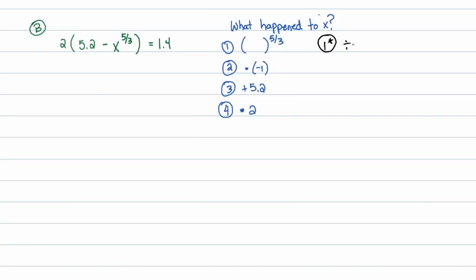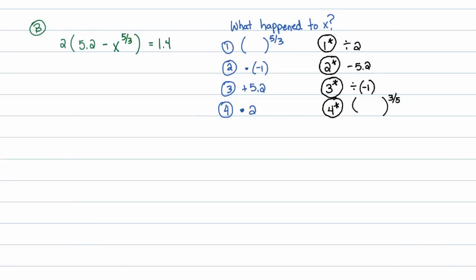To undo all of that in reverse order: first I'll divide by 2, since the last thing done was multiply by 2. Dividing both sides by 2: 2 over 2 turns into 1, giving me 5.2 minus x to the 5/3 equals 0.7. Since there's only a 1 multiplying the parenthesis, there's no reason to keep the parenthesis, so I'll rewrite without it.